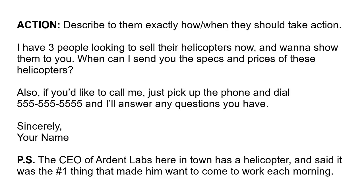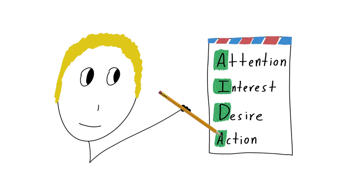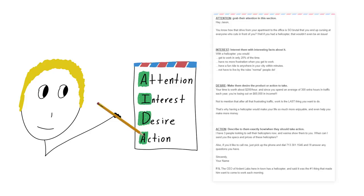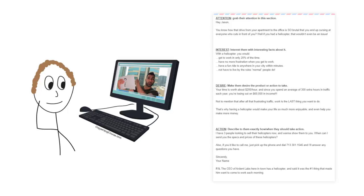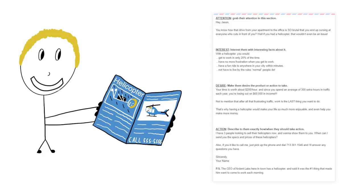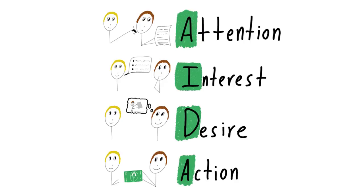All we did was make a pitch for this guy to buy a helicopter by following the ADA formula — attention, interest, desire, action. Now we have an entire completed sales pitch that we can send out as a cold email, a phone script, a video script, a sales page, a brochure, or a one-pager. And if we want to make it a really long sales page, all we have to do is add more content to each of these sections.